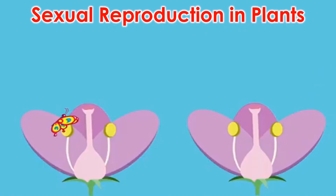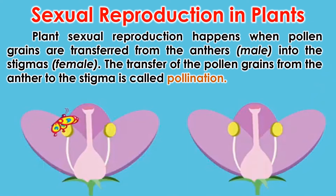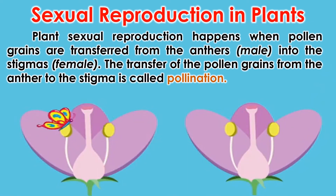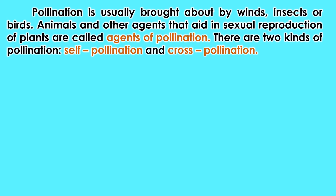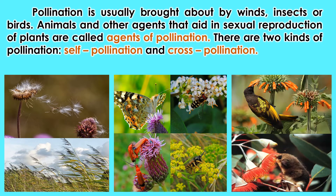Sexual reproduction happens when pollen grains are transferred from the anthers into the stigmas. The transfer of pollen grains from the anthers to the stigma is called pollination. Pollination is usually brought about by wind, insects, or birds. Animals and other agents that aid in sexual reproduction of plants are called agents of pollination.